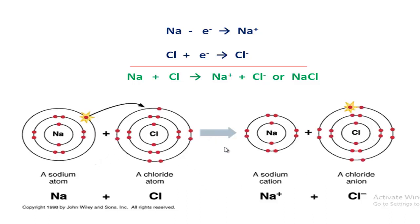If the question asks you to explain the formation process of sodium chloride, you have to explain the language, give the equation, and also draw the diagram. You will draw this diagram using a pencil. You can draw the electrons as dots or use a cross sign, but you must draw it with pencil.